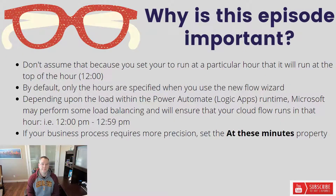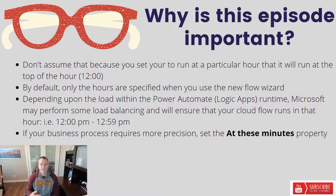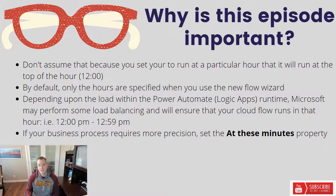Let's talk a little bit about why this episode is important. Don't assume that when you set your Cloud Flow to run at a particular hour, it'll always run at the top of the hour — for example, right at 12 o'clock. By default, when you configure your Cloud Flow and your recurrence trigger, the hours are specified when you use the new Flow Wizard, and I'm going to show you this on the following slide.